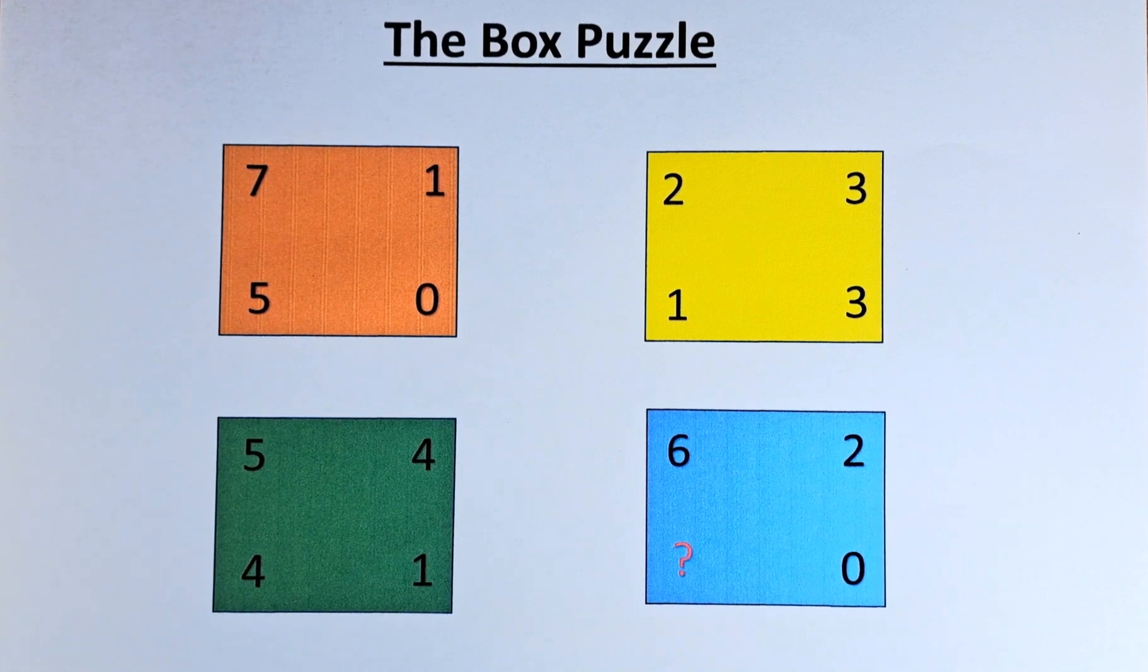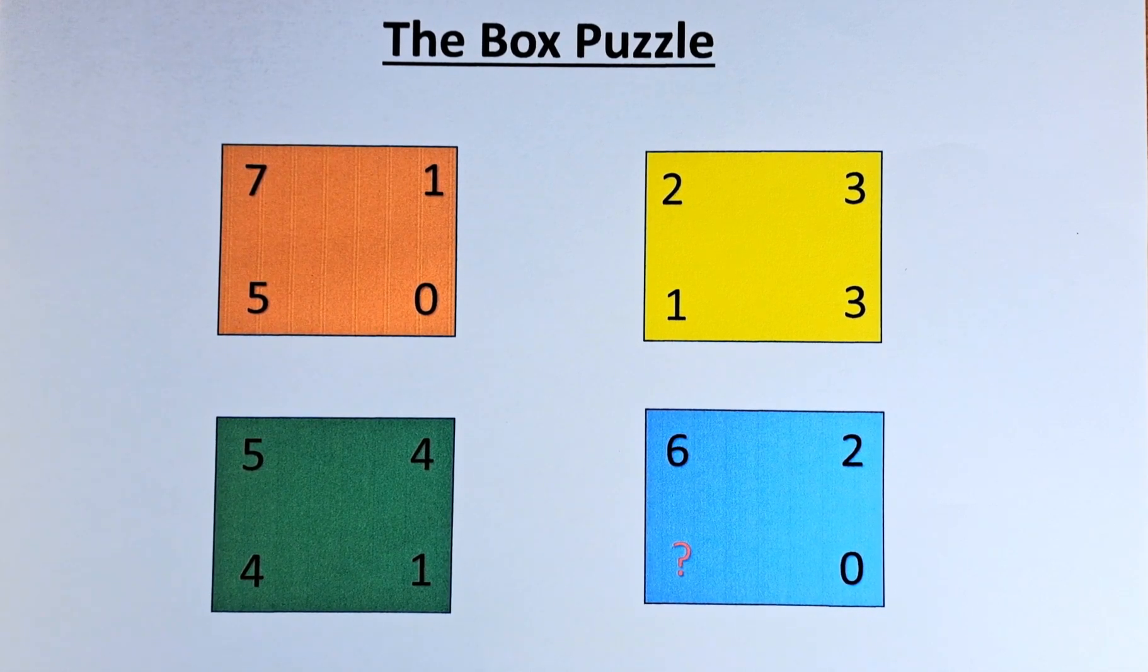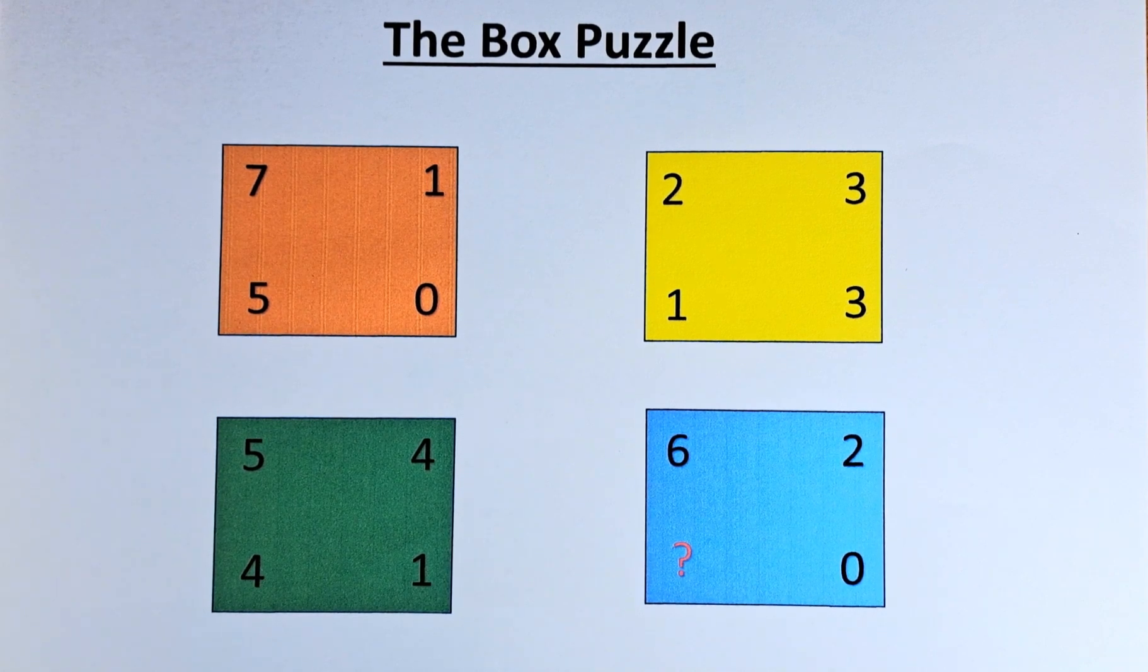There are four boxes in front of us. In the orange box, we have the number 7150. In the yellow box, we have 2313.